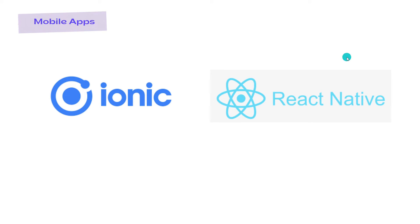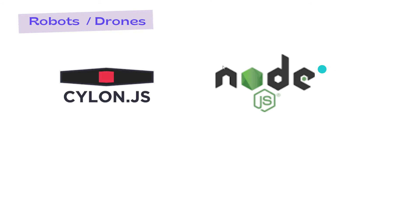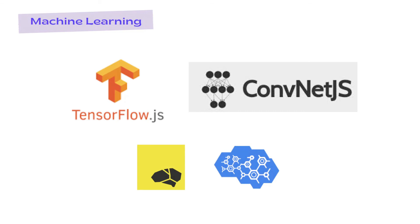For mobile development you can use Ionic or React Native — both are very famous. React Native is Facebook's UI framework and is used in all of Facebook's products. For robotic and drone development you can use Cylon.js and also Node.js. For machine learning we have TensorFlow.js, Cloud.net.js, and many other libraries. You can check links in the description for detailed information on each mentioned framework.